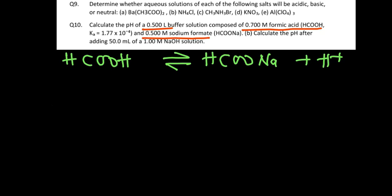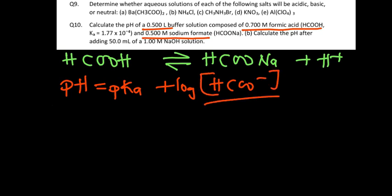The Henderson-Hasselbalch equation gives us a formula to calculate the pH. It's pH equals pKa plus the log of, since we are dealing with an acid, the conjugate base divided by the acid. In this case the conjugate base is this compound, the conjugate base of the acid itself.